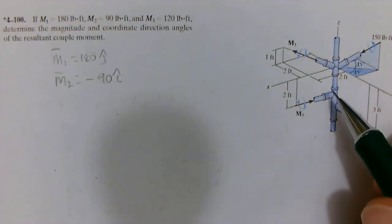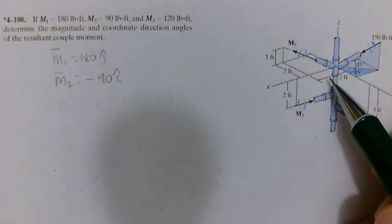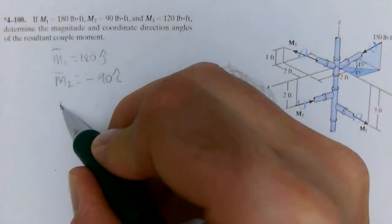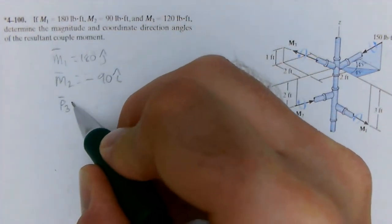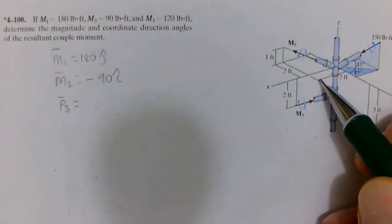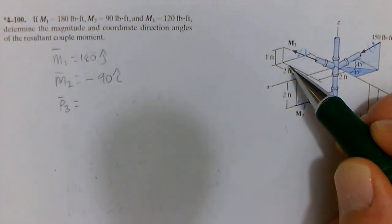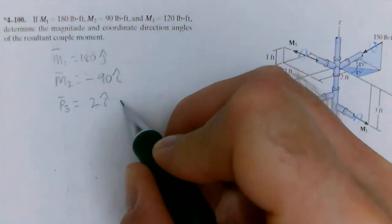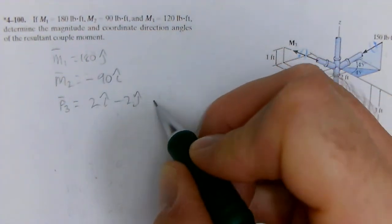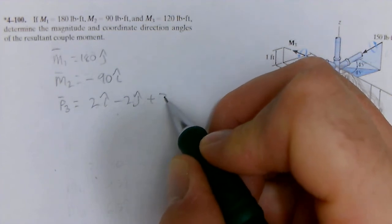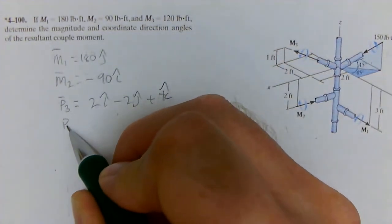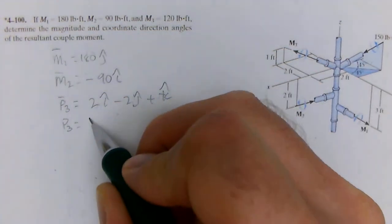Moment 3 is pointing off into space here. It's got an x, it's got a y, it's got a z. So we start out with the position vector, and it goes positive 2 in the i, negative 2 in the j, positive 1 in the k.